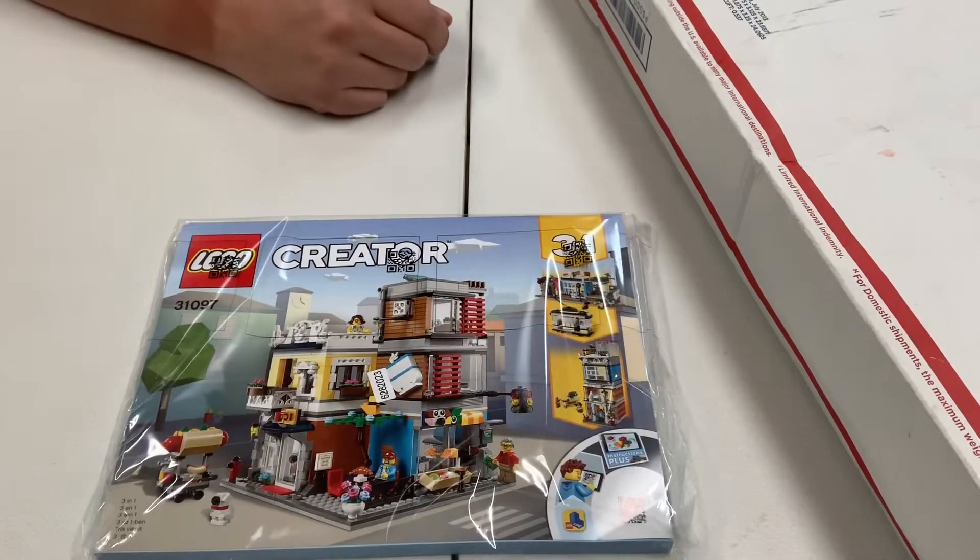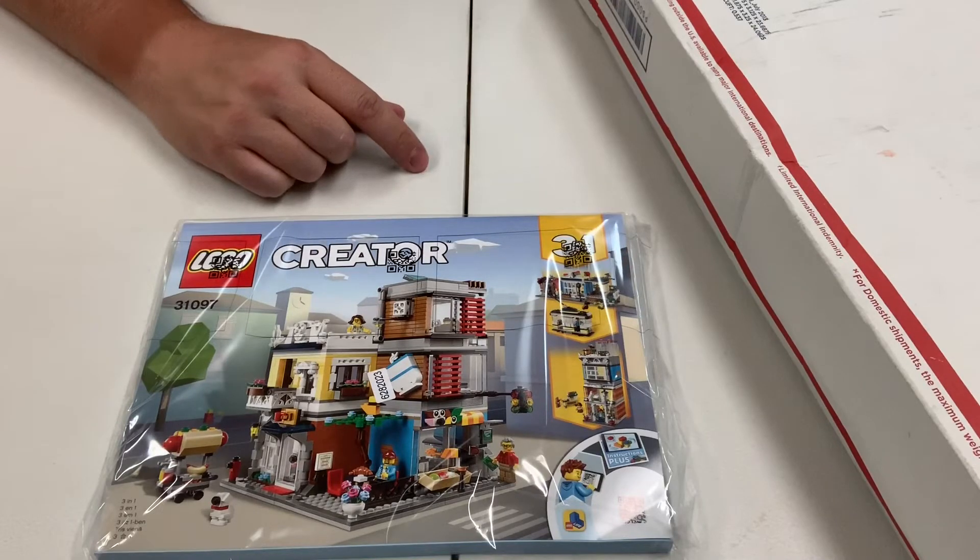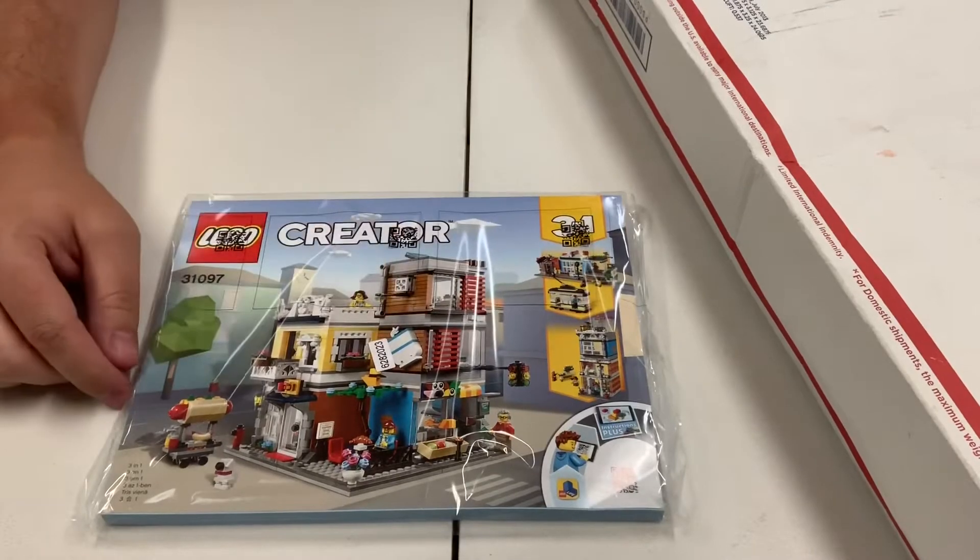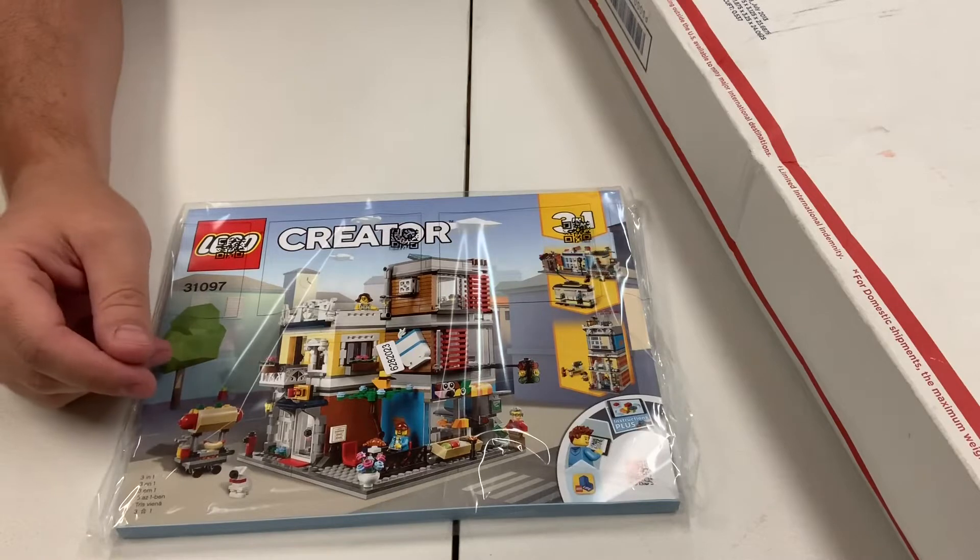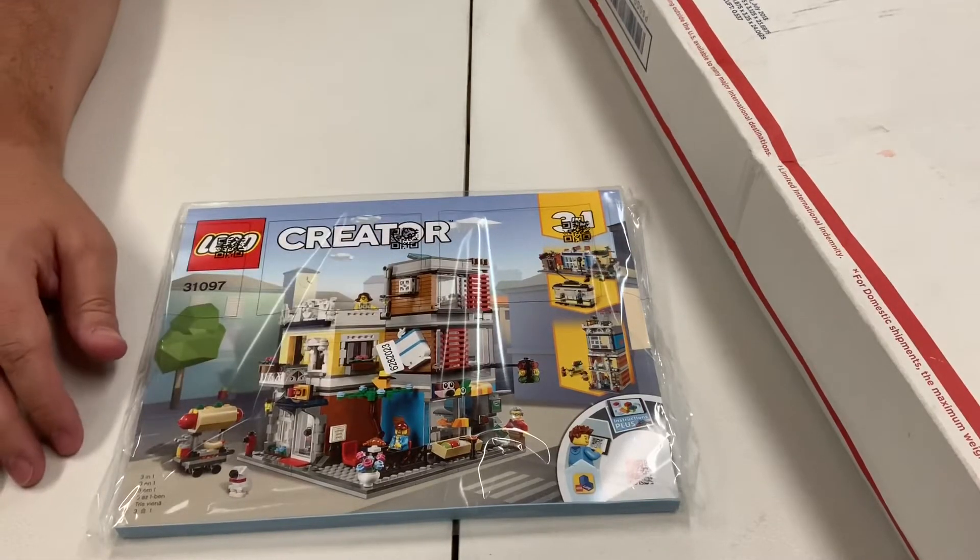First set is 31097. It's the 3-in-1, like the little coffee place. It's got the coffee place. I believe it has like another like a pet store, like a littler one, and then like an apartment and stuff like that. So I think that'll look pretty good in the city.